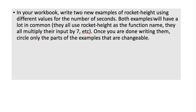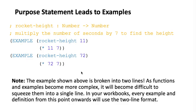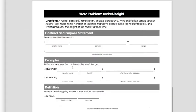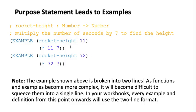In your workbook, write two new examples of rocket-height using different values for the number of seconds. The examples will have a lot in common and will look a lot alike. Once you're done writing them, circle the parts that are changeable. Use the examples shown as a model, but make sure yours use different values. They should still show how the rocket-height function should work. Pause and write those two examples now.